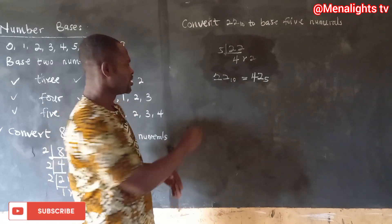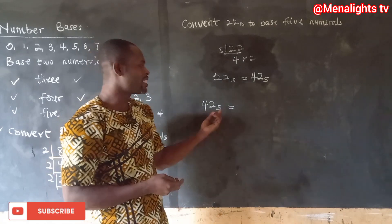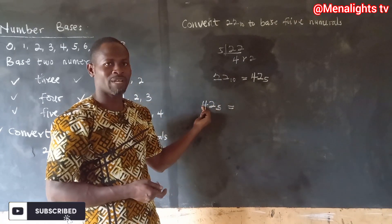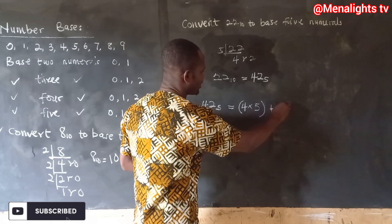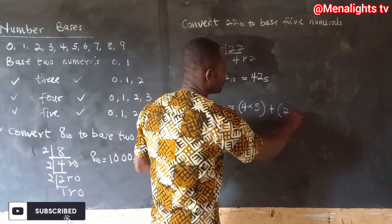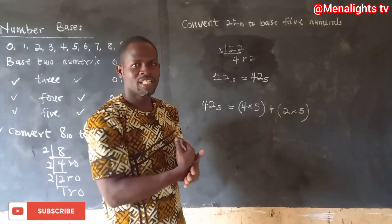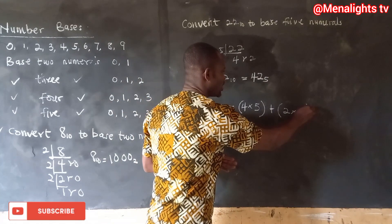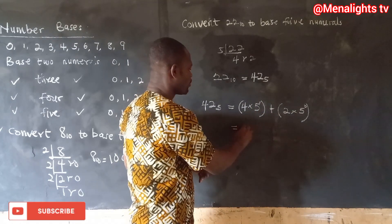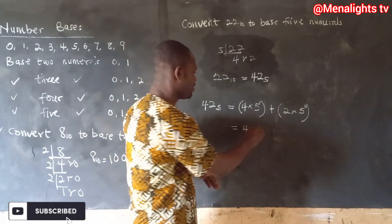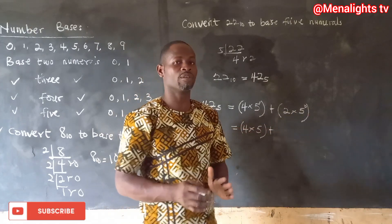Now let's convert 42 base five back to base 10. We multiply each digit by the base, using the position as the exponent, numbering from right to left starting at zero. So we have four times five to the exponent one, plus two times five to the exponent zero.